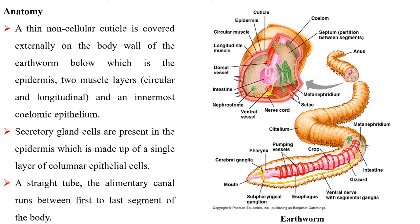Anatomy: A thin non-cellular cuticle is covered externally on the body wall of the earthworm, below which is the epidermis, two muscle layers and an innermost coelomic epithelium. Secretory gland cells are present in the epidermis, which is made up of a single layer of columnar epithelial cells.